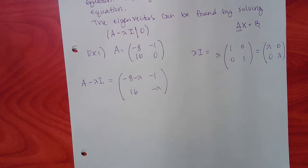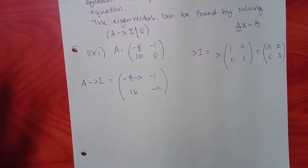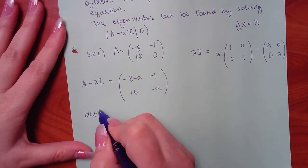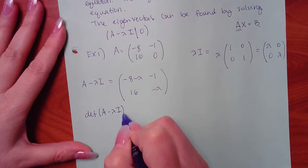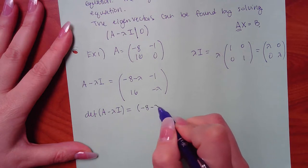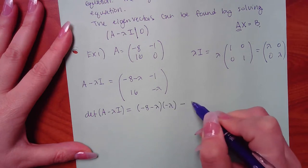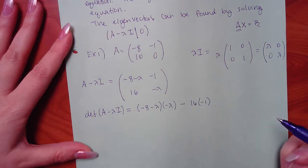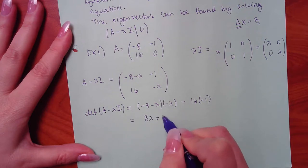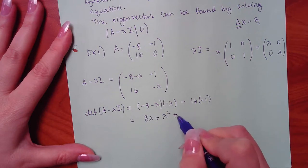The shortcut for the next problem: just subtract lambda from all diagonal components, since the identity matrix only has values on the diagonal. Taking the determinant gives (negative 8 minus lambda)(negative lambda) minus (16)(negative 1), which equals 8 lambda plus lambda squared plus 16.